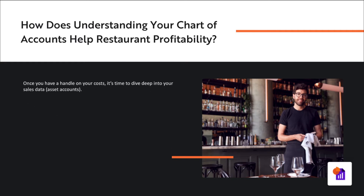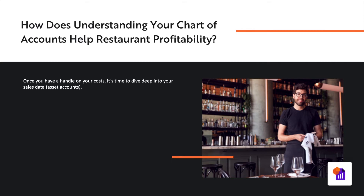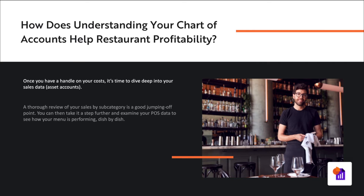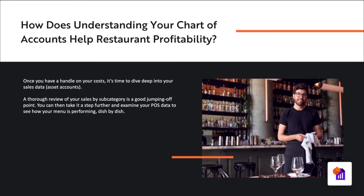Once you have a handle on your costs, it's time to dive deep into your sales data, also known as the asset accounts. A thorough review of your sales by subcategory is a great jumping-off point. You can then take it a step further and examine your POS data to see how your menu is performing dish by dish. This is going to set you up to work with your chef on menu engineering for greater profit.